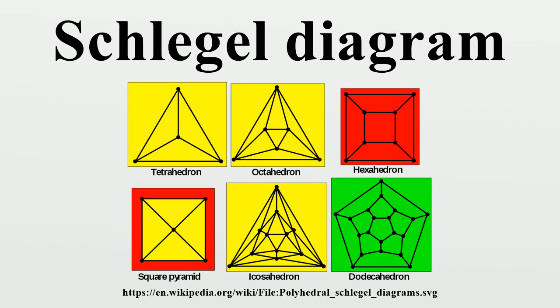In geometry, a Schlegel diagram is a projection of a polytope from n-dimensional space into n-1 dimensional space through a point beyond one of its facets or faces.